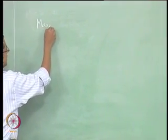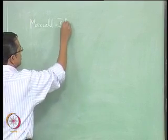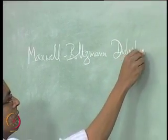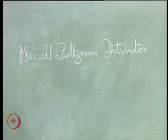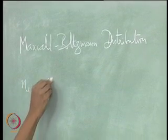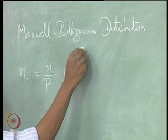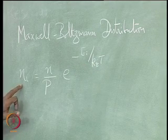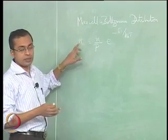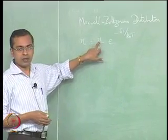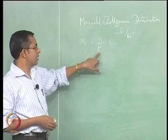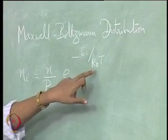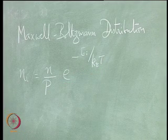Looking at the Maxwell-Boltzmann distribution, we had an expression that looked like this: n_i equals n divided by p, times e to the power minus E_i divided by k_B T. This represented the number of electrons in energy level E_i, given by the total number of electrons in the system divided by the partition function p, and this term e to the power minus E_i over k_B T, where E_i is the energy level we are looking at and k_B is the Boltzmann constant.